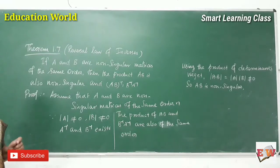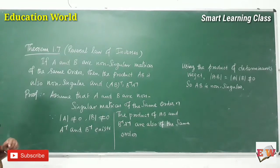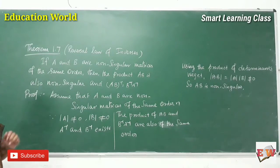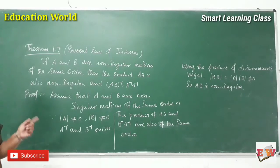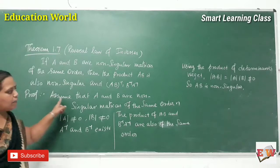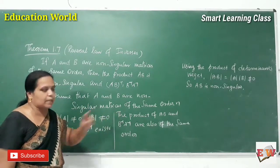First, they have given A and B are non-singular matrices and the product AB is also non-singular, and (AB)⁻¹ is equal to B⁻¹A⁻¹. So, first we have to prove A is non-singular and B is non-singular, and then if we find the product AB, that is also non-singular. So, assume that A and B are non-singular matrices of the same order N.